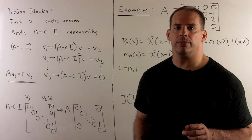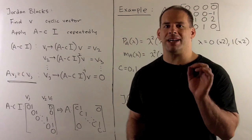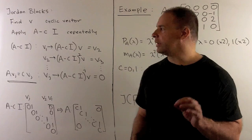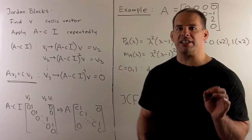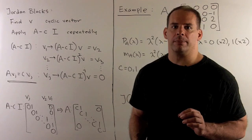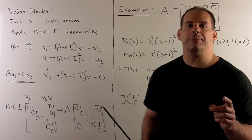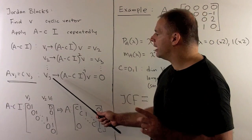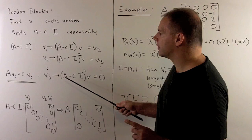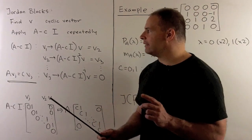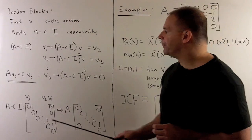Let's take a closer look at Jordan blocks. Assume we have a vector V in the top level — V is in W sub J but not in W sub J minus 1. That means we can apply A minus C sub i to V up to J minus 1 times and get something nonzero, but applying it J times sends it to 0. We start with V, call it V1. We apply A minus C sub i to get V2, then V3, up to V sub J. Applying it one more time sends V sub J to 0. That's the basis we use for our block. Note that V sub J is an eigenvector for A with eigenvalue C: applying A minus C sub i to V sub J gives 0, which is the eigenvector condition. Also note that the span of these vectors gives only a one-dimensional eigenspace for A with eigenvalue C.